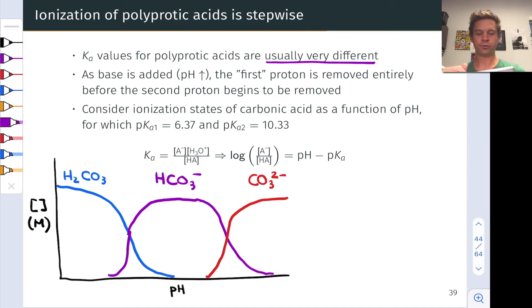When the concentration of, let's say, HCO3 is maximal, there's very little H2CO3 and very little CO3 2 minus around. But there are these points where we have equal concentrations of the conjugate pair.